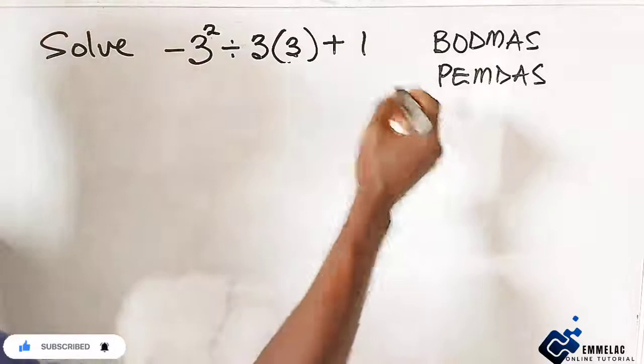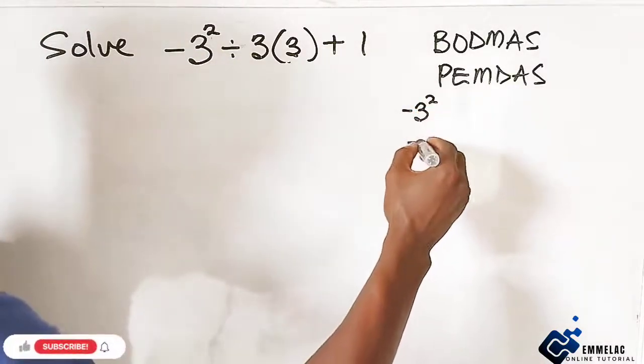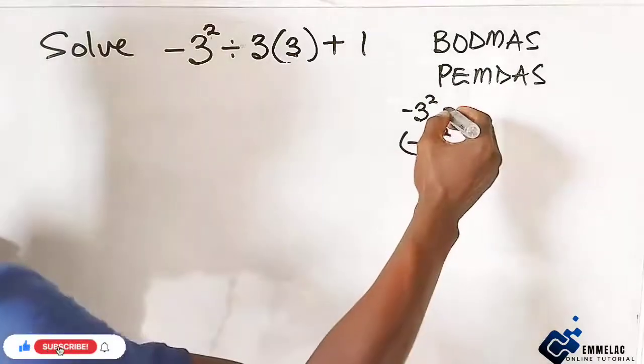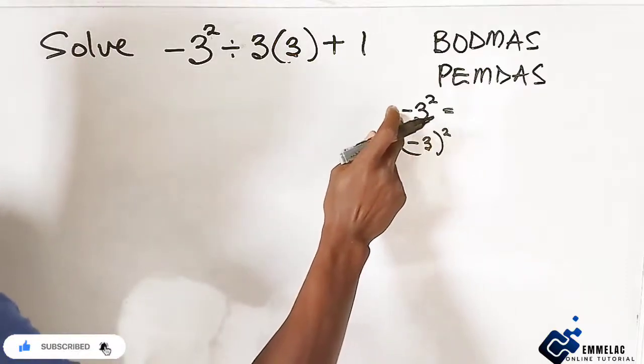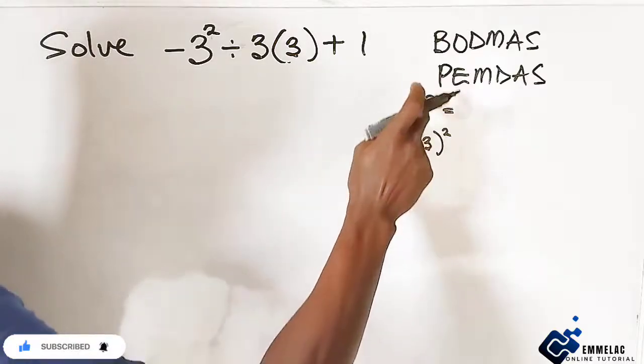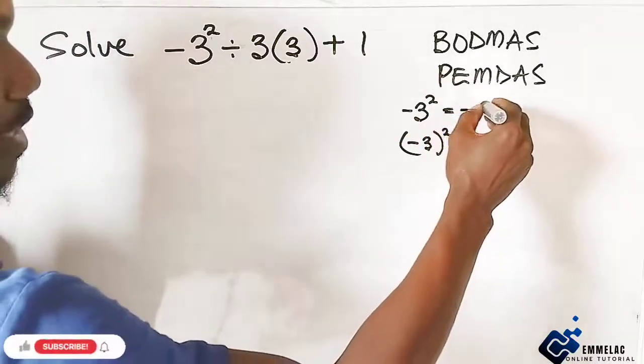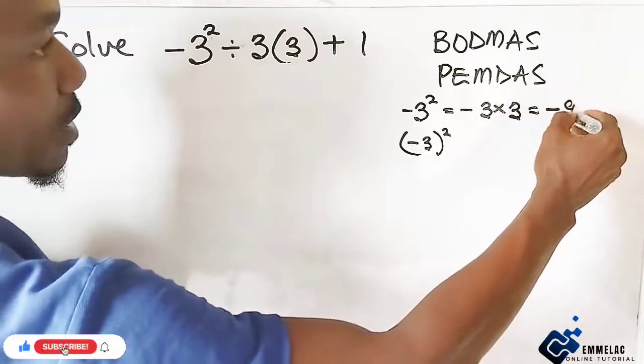Now there is a difference between -3 raised to the power of 2 and -3 all raised to the power of 2. In this case here, we have minus, and 3 only is raised to the power of 2, which then implies that -3 times 3, which will give us what? -9.